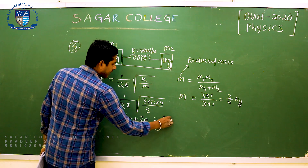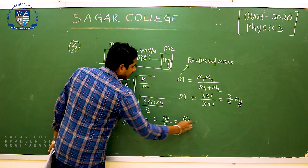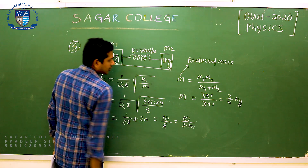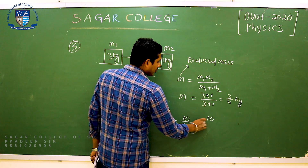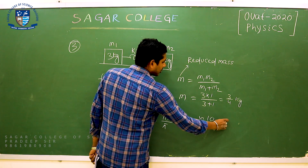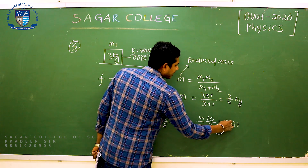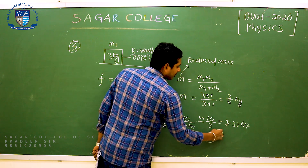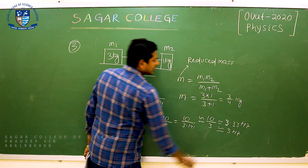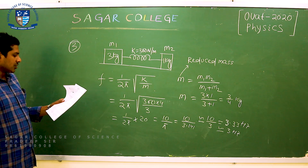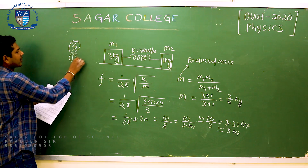The result is equal to 10 by π. That means 10 divided by 3.141, which is approximately 3.33 Hz. That is approximately equal to 3 Hz. So question number 3, option D is the correct answer.